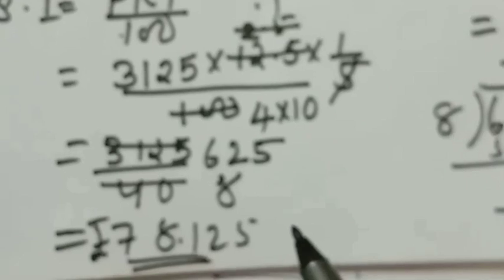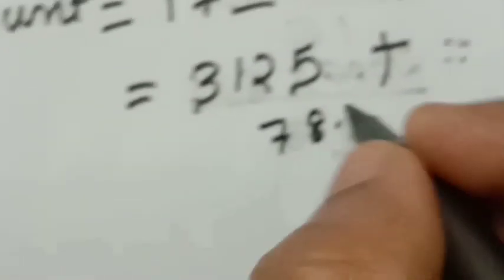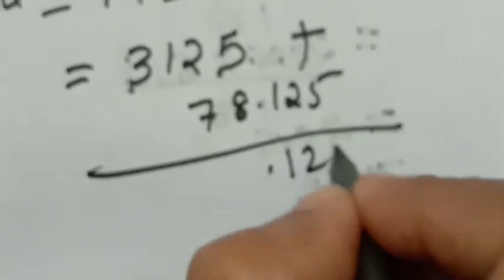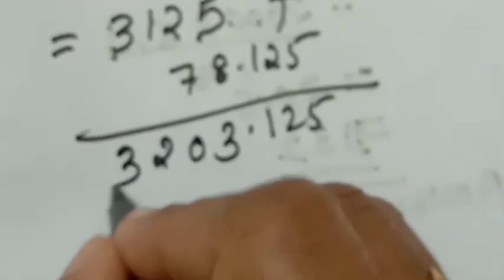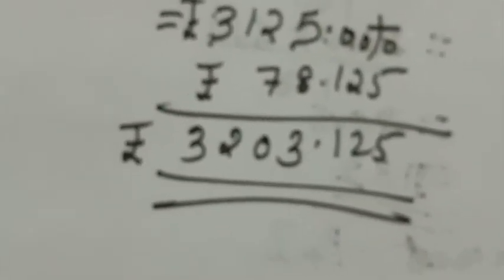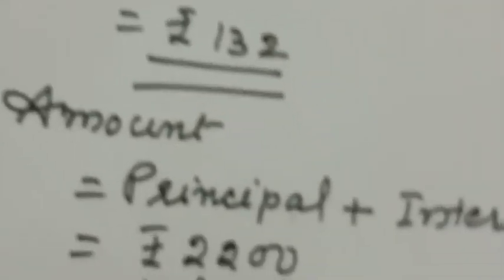Clear, children? I hope everybody understood. Now you have to find out the Amount. Amount equals Principal plus Interest. Principal is 3125 plus Interest 78.125. Adding them, you will get the answer 3203.125. I hope everybody is clear on this problem. Whenever you get time in days, you have to convert the days to years by dividing by 365.